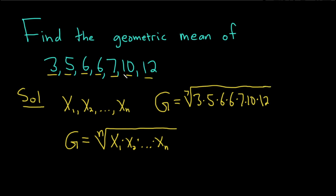Okay, so basically 7 numbers. So you take the 7th root and you multiply them all. If you had 10 numbers, you'd take the 10th root. So this is equal to, so I'm going to multiply these numbers. We have 3 times 5 times 6 times 6 times 7 times 10 times 12.